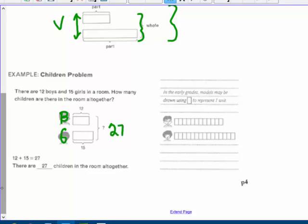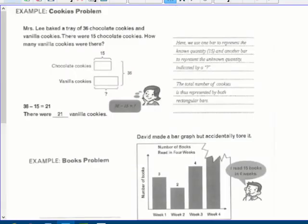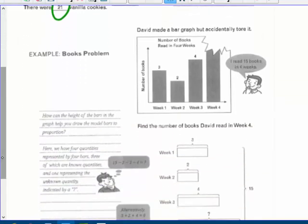You can use little tiny rectangles and divide it up into the 12 rectangles and the 15, but that's too time consuming. Cookies. Okay, here's the next one. Mrs. Lee baked a tray of 36 cookies and chocolate and vanilla cookies. There were 15 chocolate cookies. How many vanilla cookies were there? Well, now we know the total is 36 and we have one of the parts. It's 15. So if we subtract 36 minus 15, we'll get 21 vanilla cupcakes. Notice the question mark. What is it that I have to find? I have to find how many vanillas.